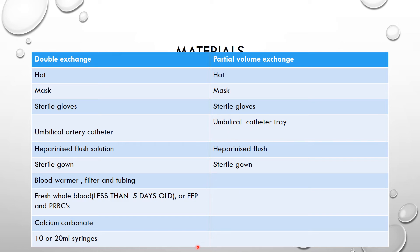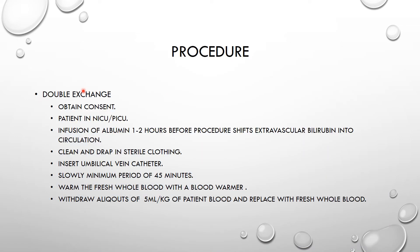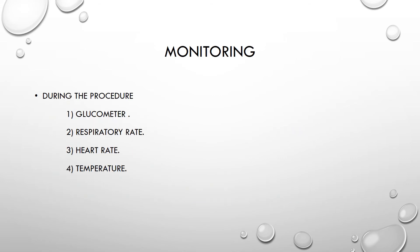For the double volume exchange transfusion procedure — for example in hyperbilirubinemia — you obtain consent from the mother or caregiver, then place the patient in the ICU. You can infuse albumin one to two hours before the procedure, as this helps shift the extravascular bilirubin into the circulation. Then clean and drape the area with sterile clothing.